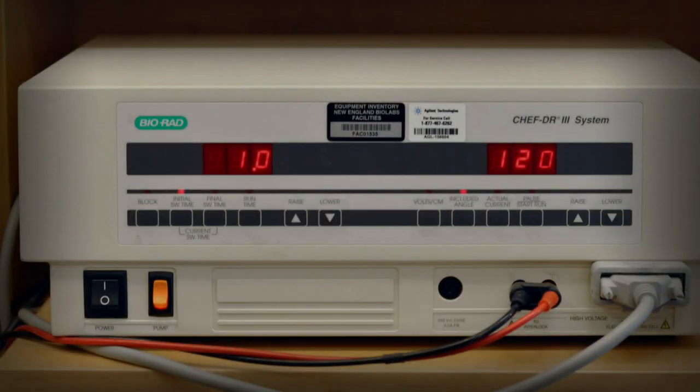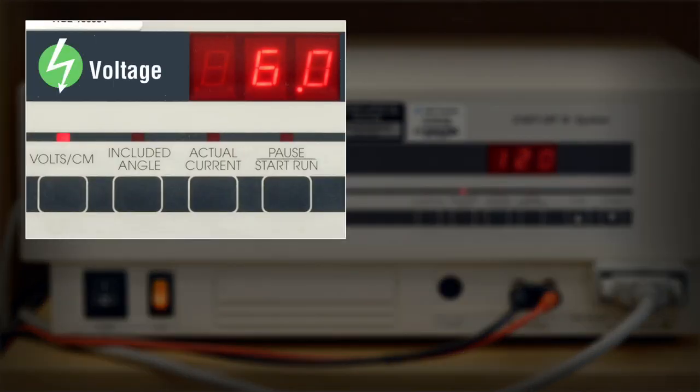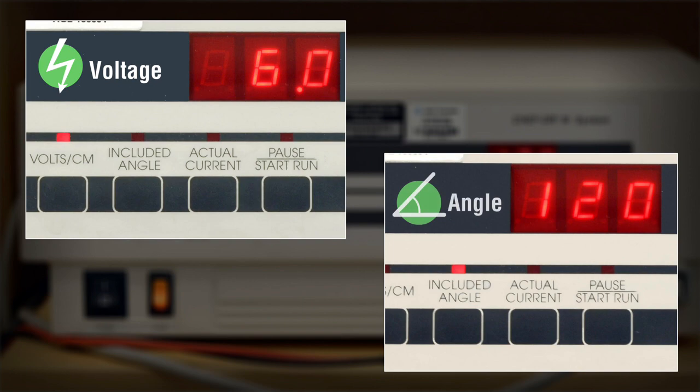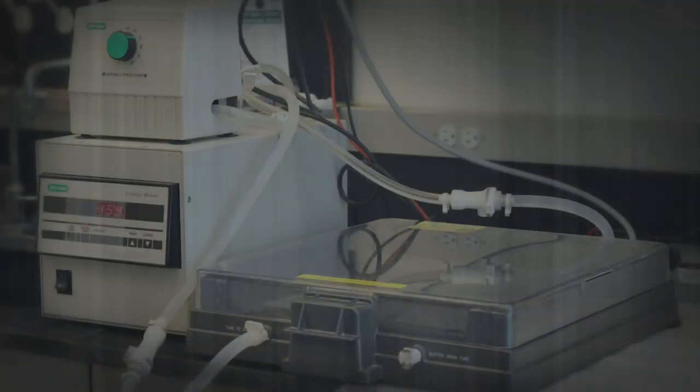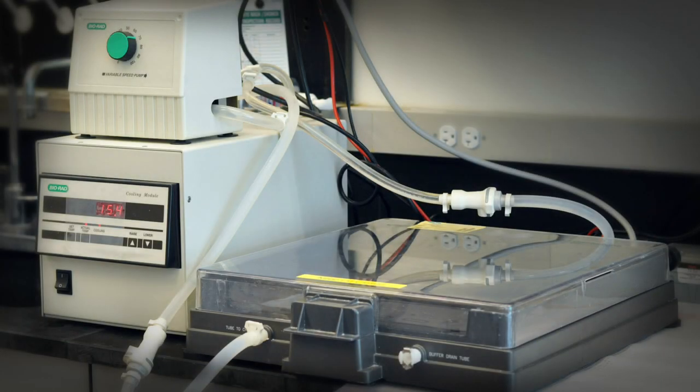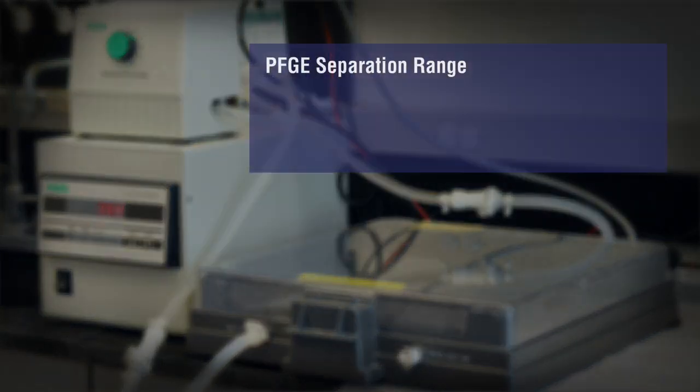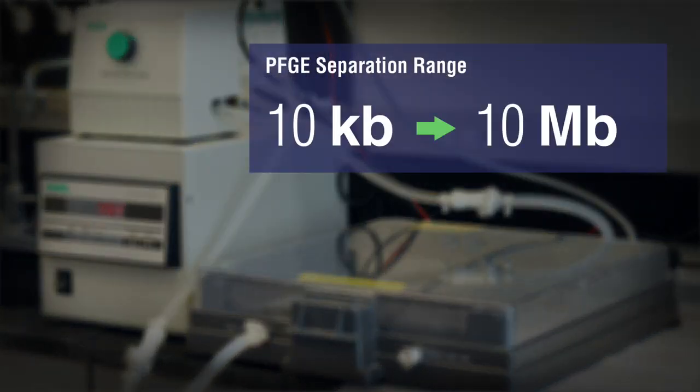Most PFGE protocols are optimized for 6 volts per centimeter gel runs and optimized for a 120 degree angle. With any PFGE system, depending on the migration protocol, you can separate DNA fragments or molecules from 10 kilobases to 10 megabases.